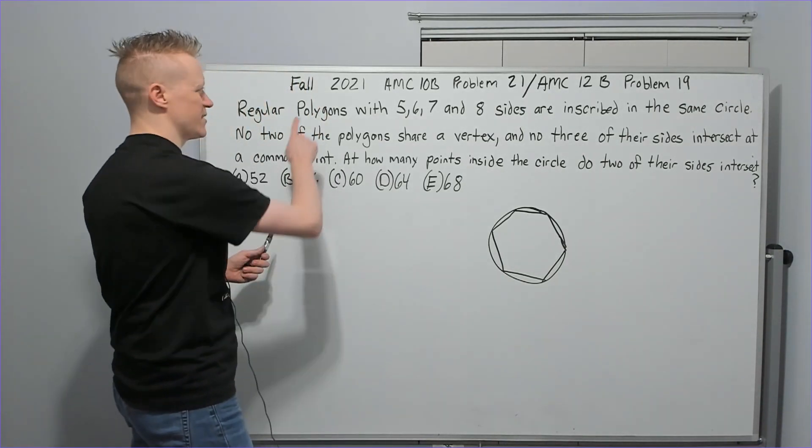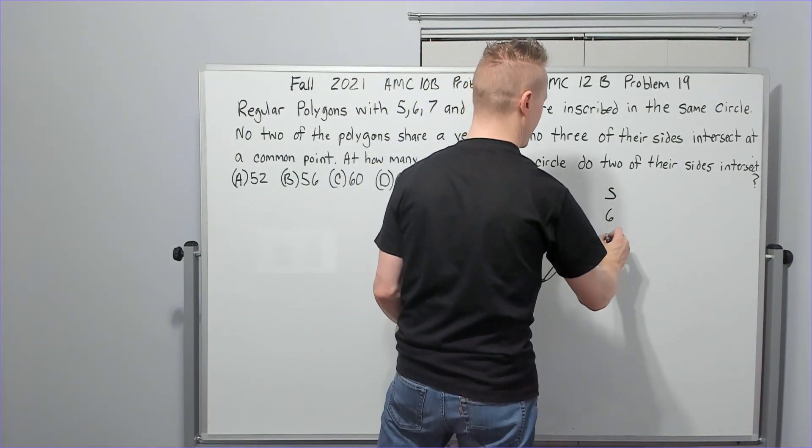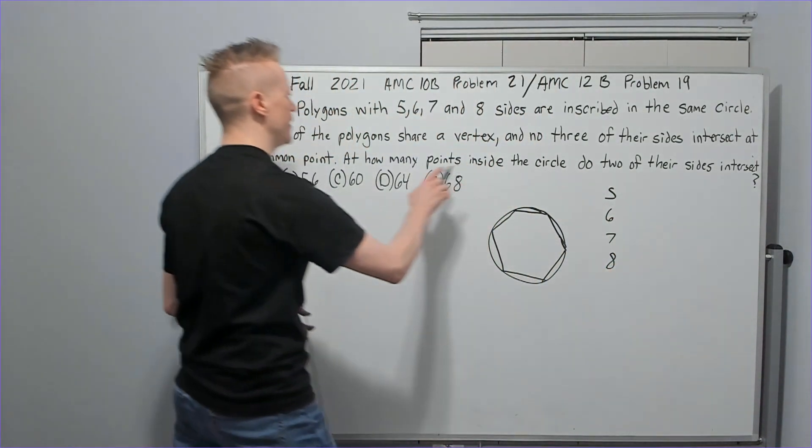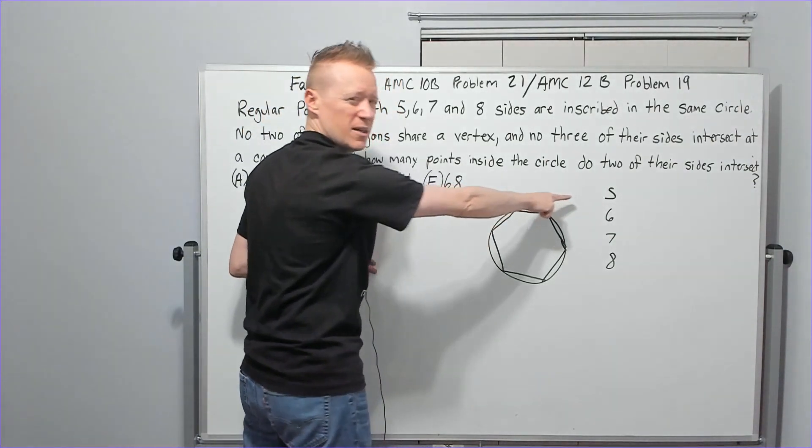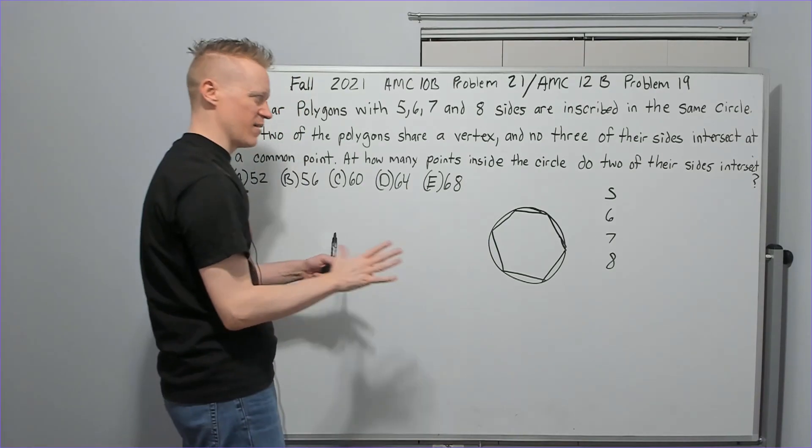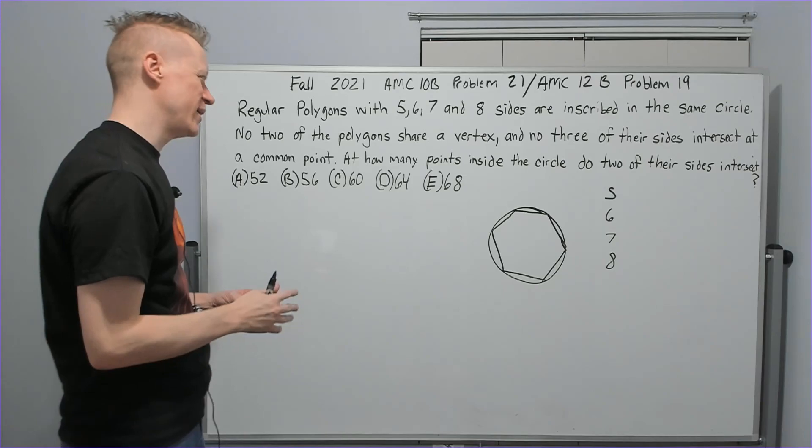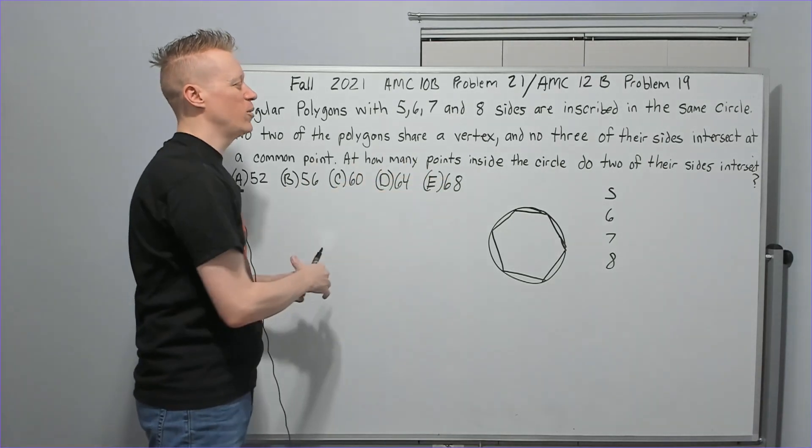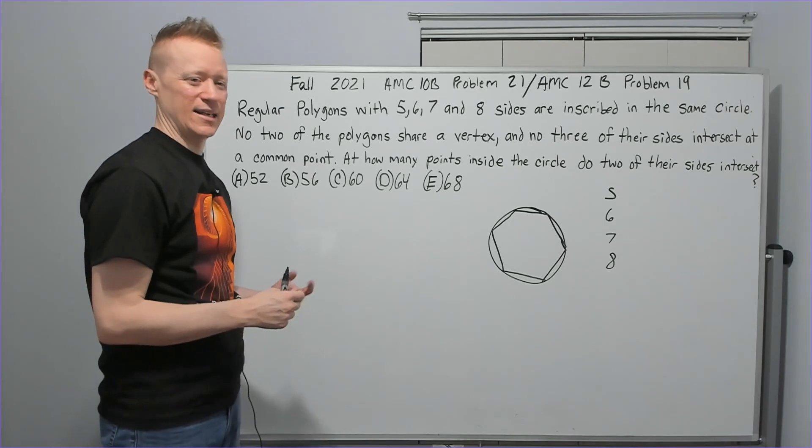Something like this, there's your regular hexagon inside of the circle. It says 5, 6, 7, and 8. Let's just write this: we've got the 5-sided, 6-sided, 7-sided, 8-sided. No two share a vertex, so I don't have to worry about the vertex of this resting on here. And no three of their sides intersect at a common point. At how many points inside the circle do two of their sides intersect?